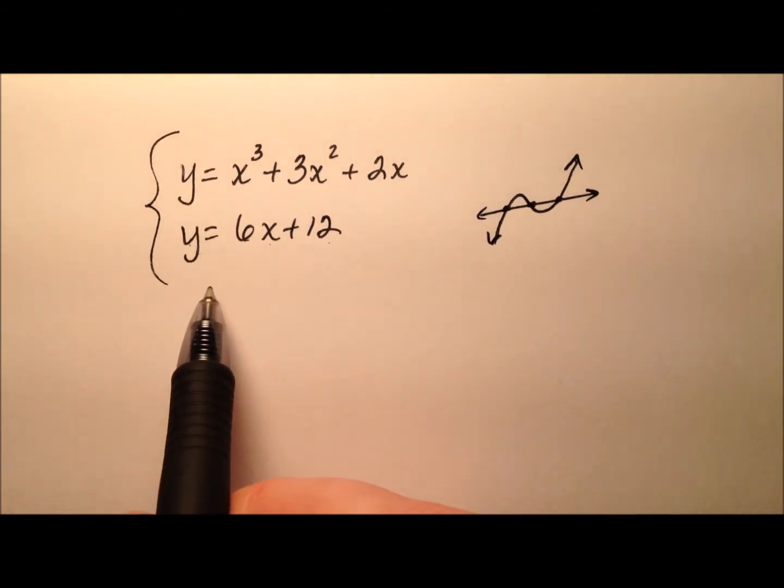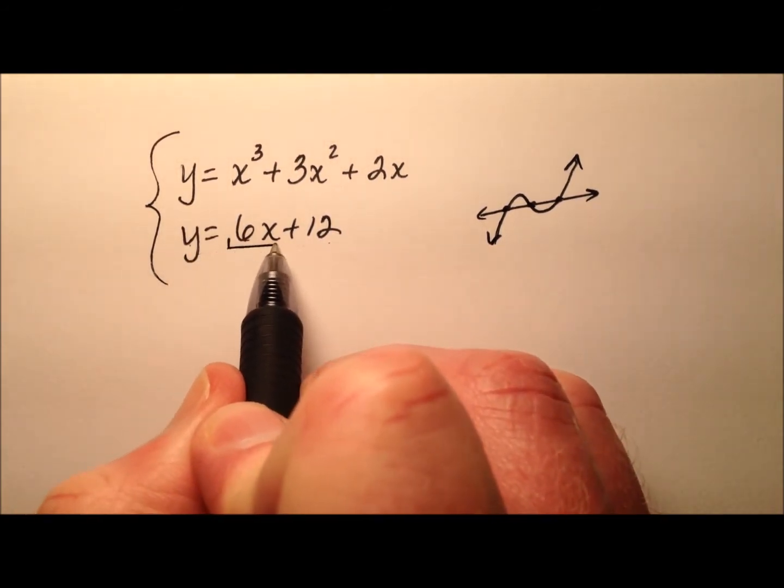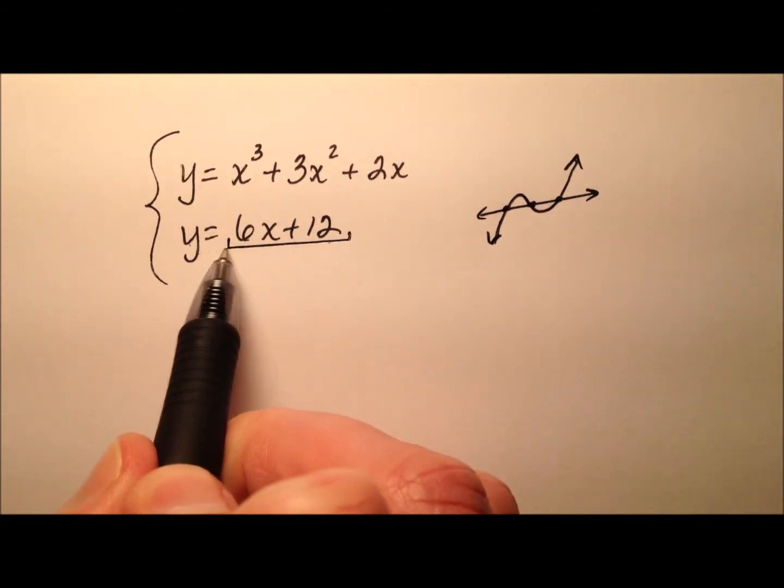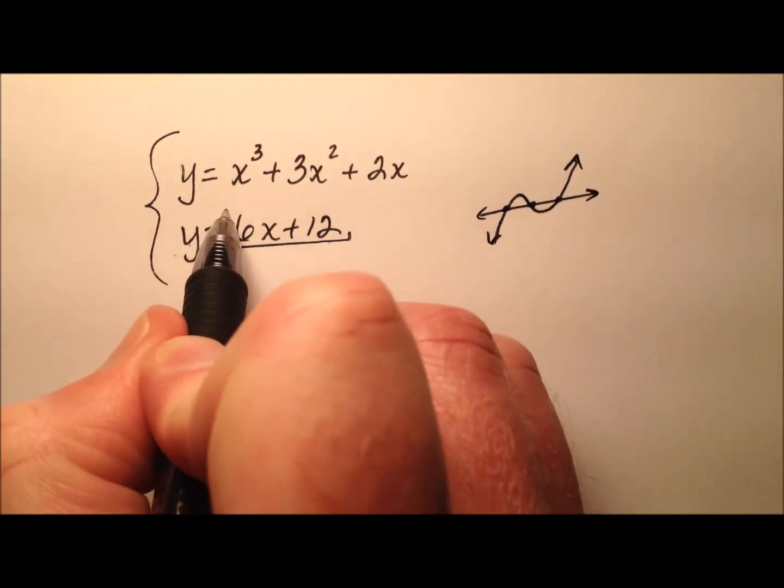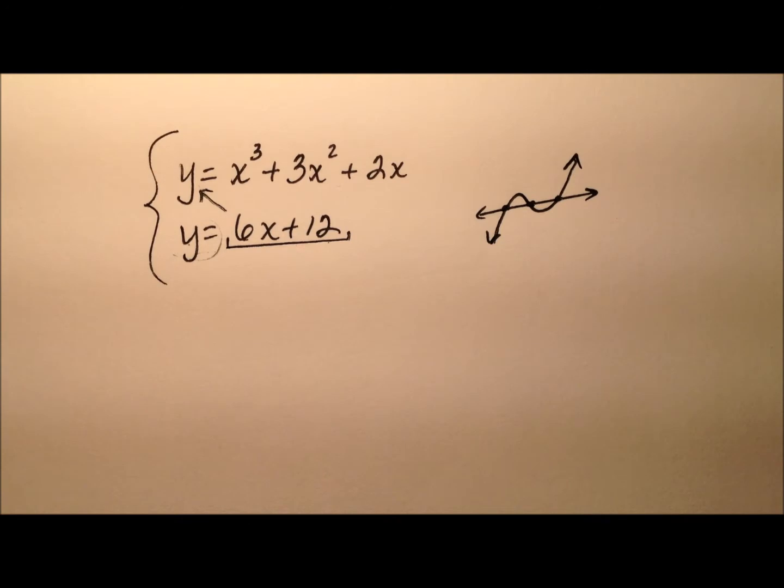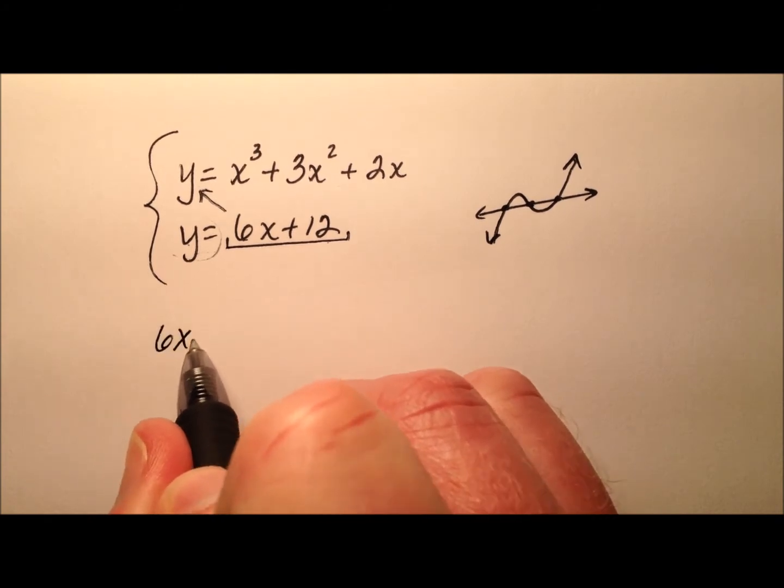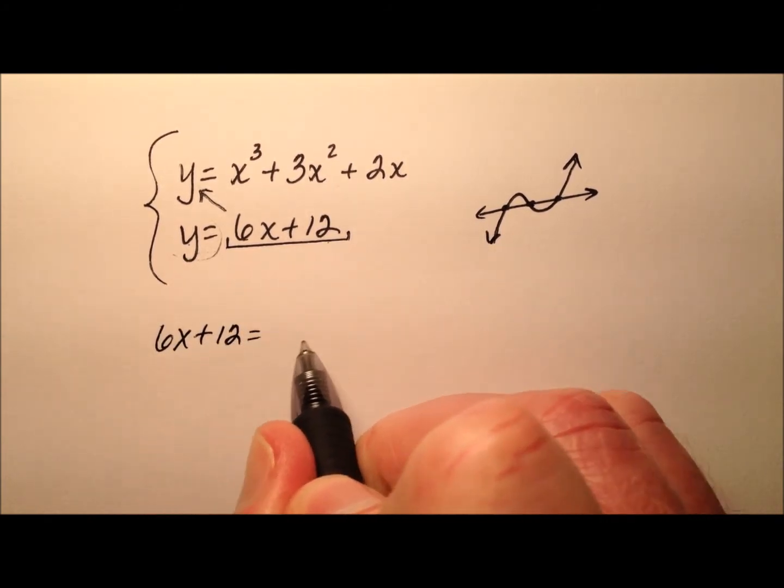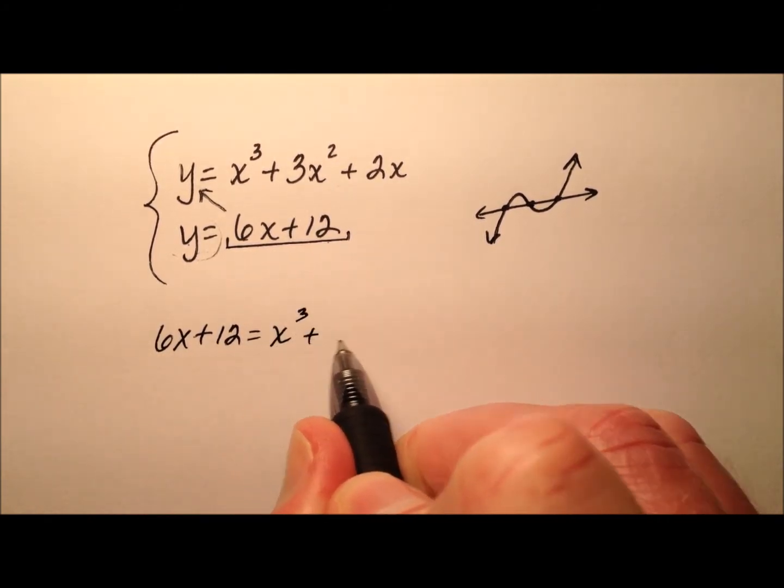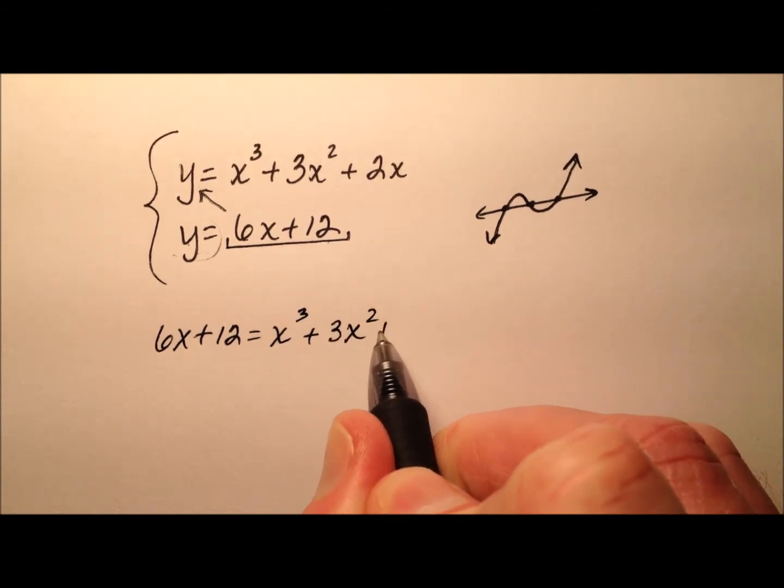It looks like substitution is going to be our best bet. We have this 6x plus 12 expression that's equivalent to y. So let's go ahead and substitute it in for y, and then we'll solve the equation that comes out here. So 6x plus 12, and that's going to equal this x cubed plus 3x squared plus 2x.